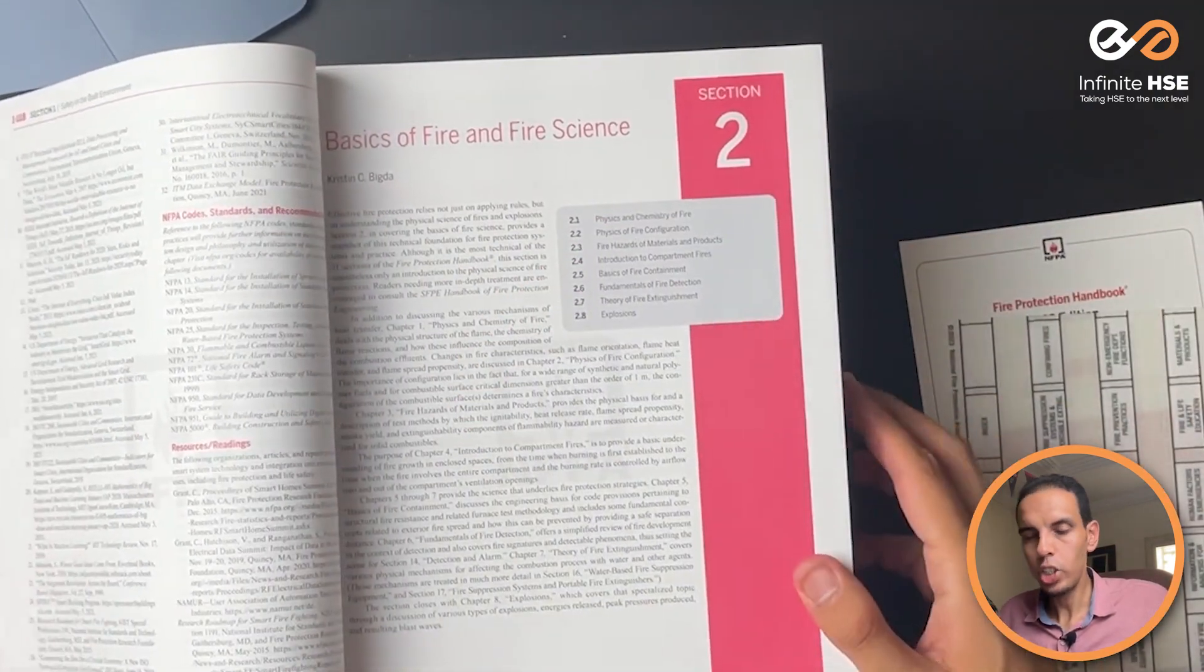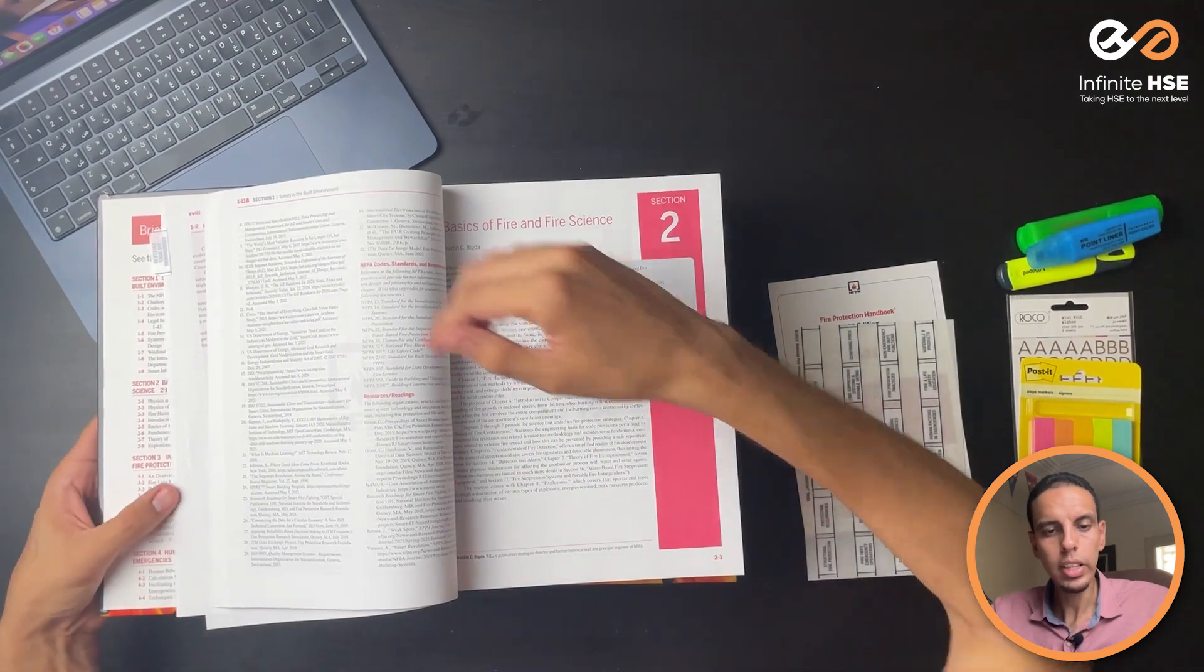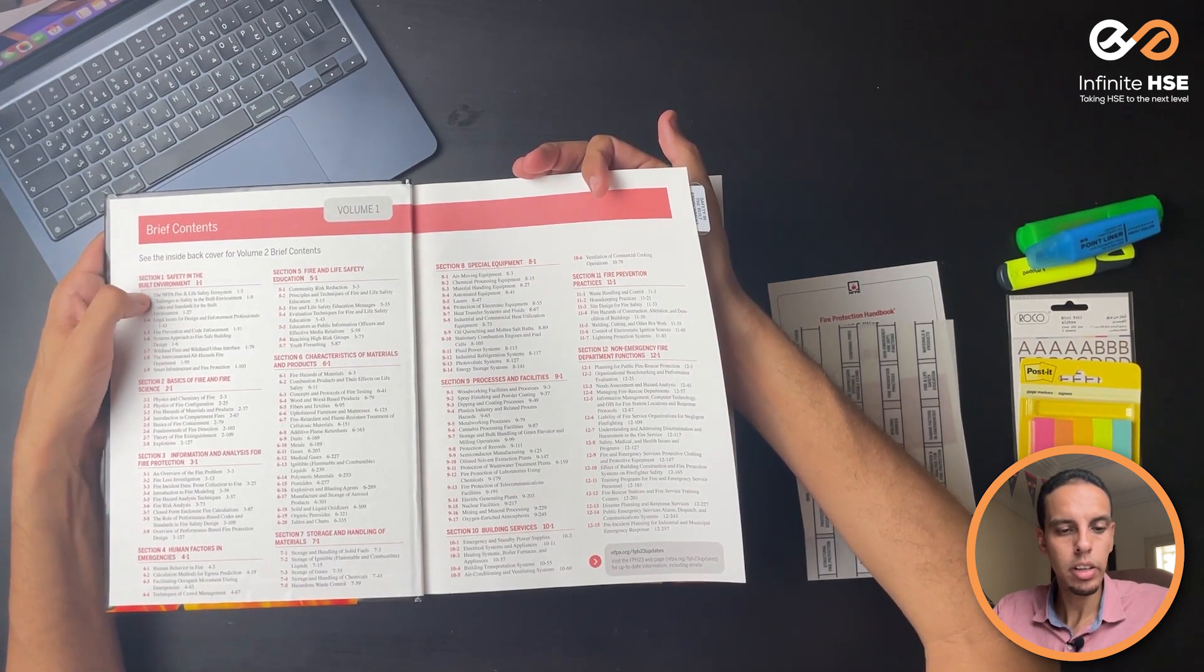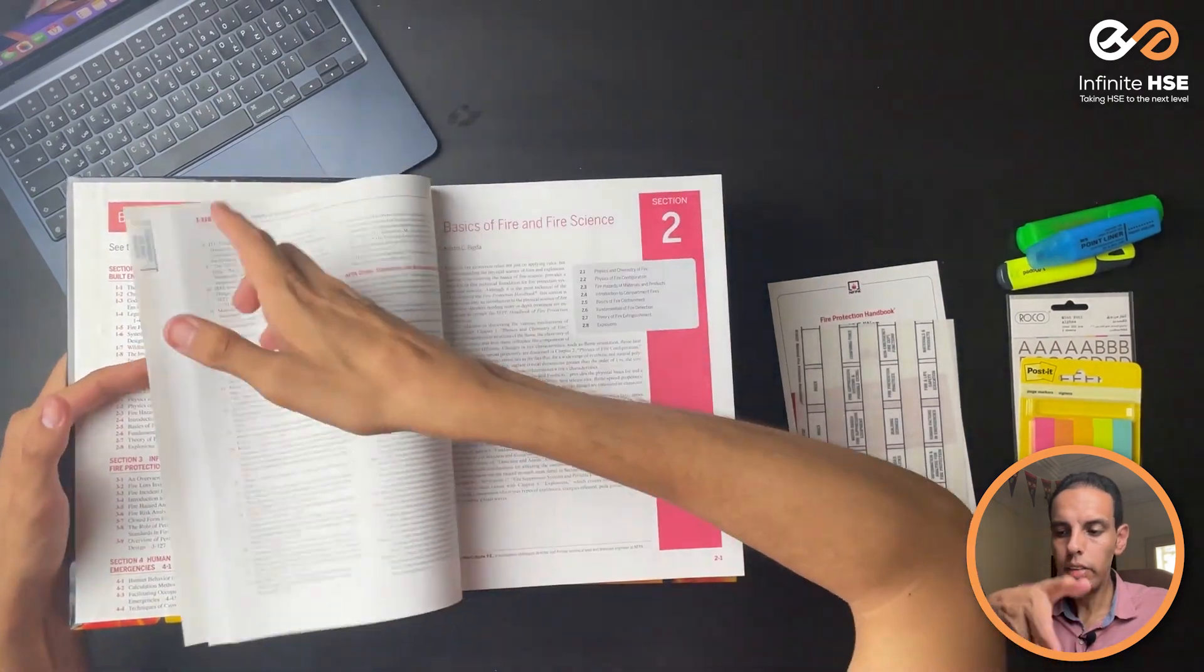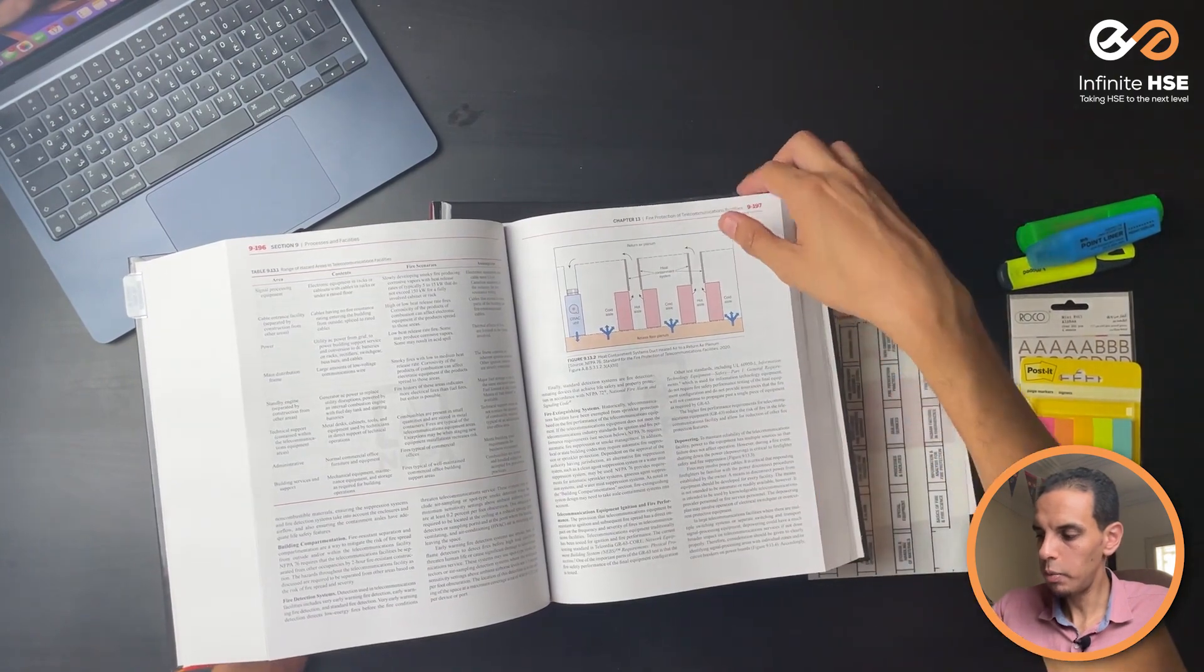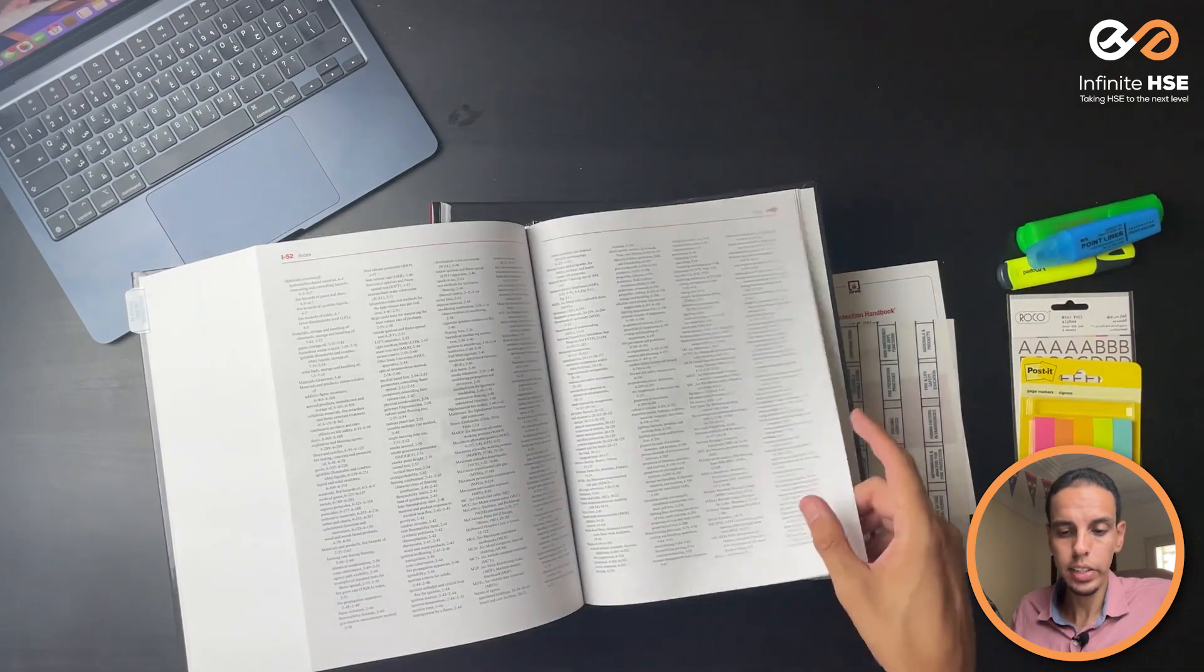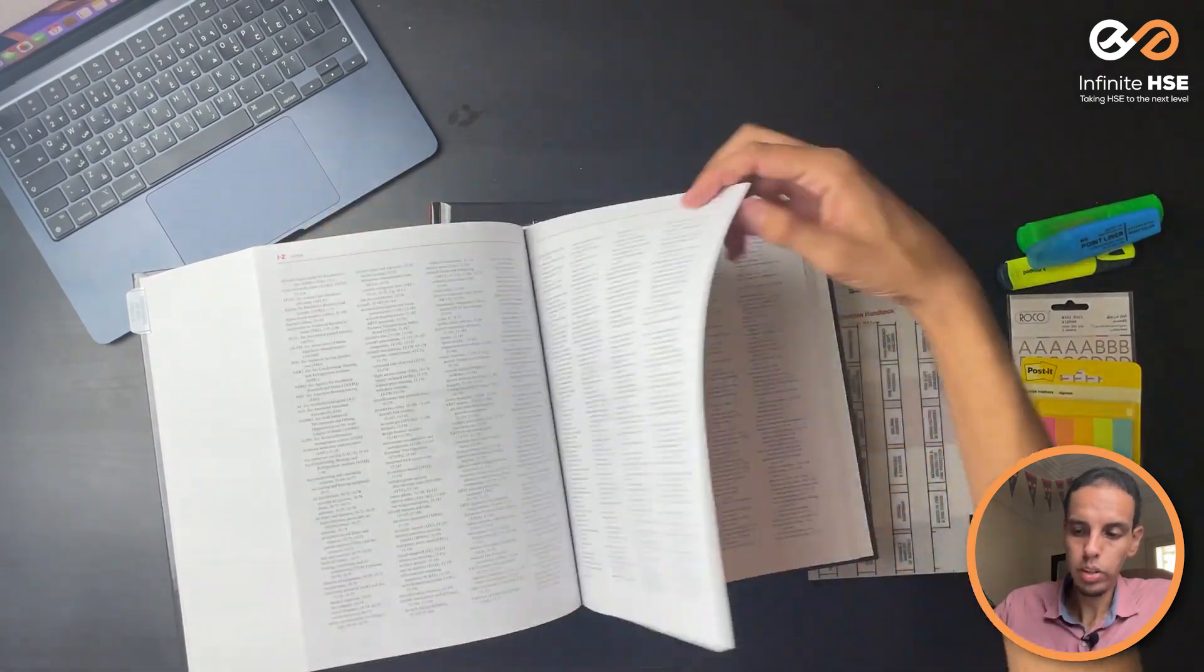At the end of each volume, you will see the index. What is this index? We have at the start the brief content for each section and chapters. Like you can see here, section 1, Safety in the Built Environment, and you have all of these chapters below this section. But at the end, it's different. At the end, you will see the index, and the index has a different concept. The index is alphabetically organized from A to Z. So you can start with A to see what you will get.